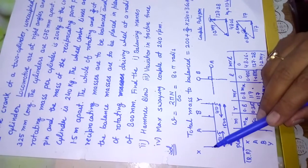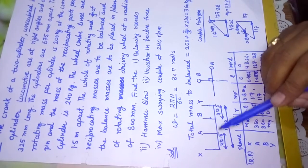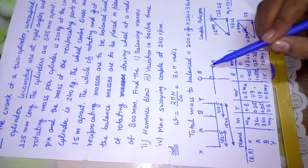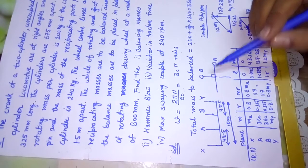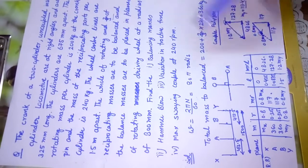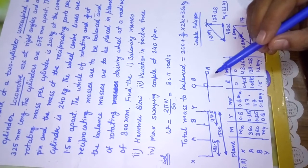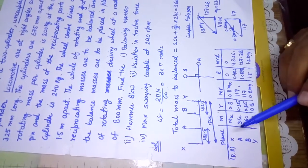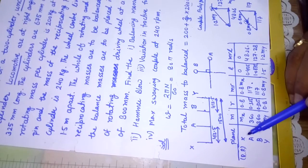We have four planes: X and Y are the locations of the two wheels, which are 1.5 meters apart. Planes A and B are the two inside cylinders, separated by 675 mm. Cylinder A and cylinder B are at 90 degrees to each other, as given in the problem — and in locomotive problems, the cranks are always taken at right angles. We take X as the reference plane and set up the table using the same graphical dynamic balancing method.